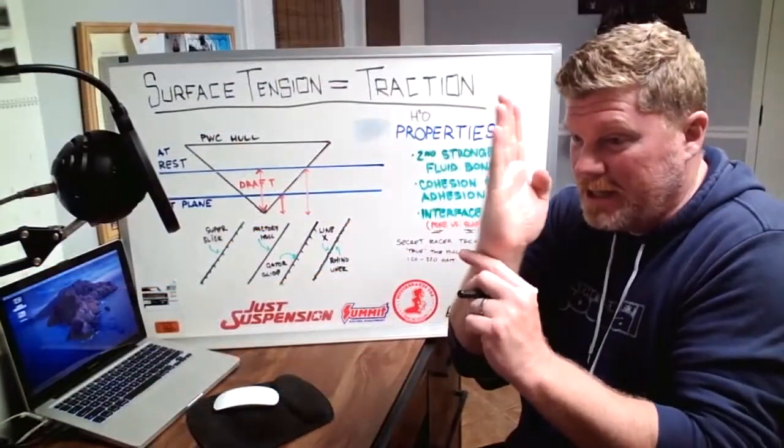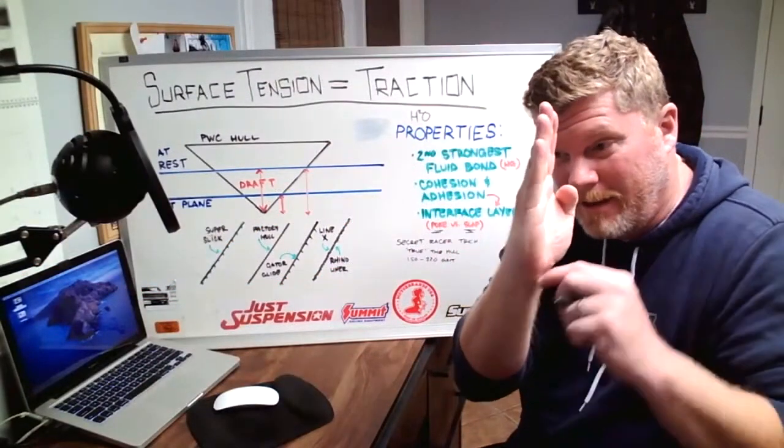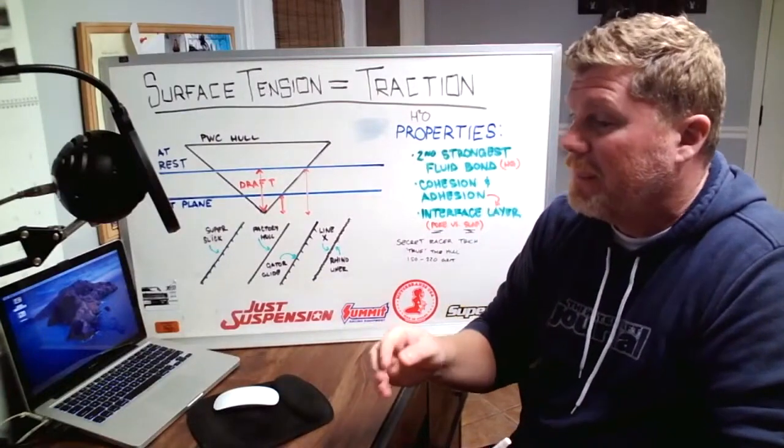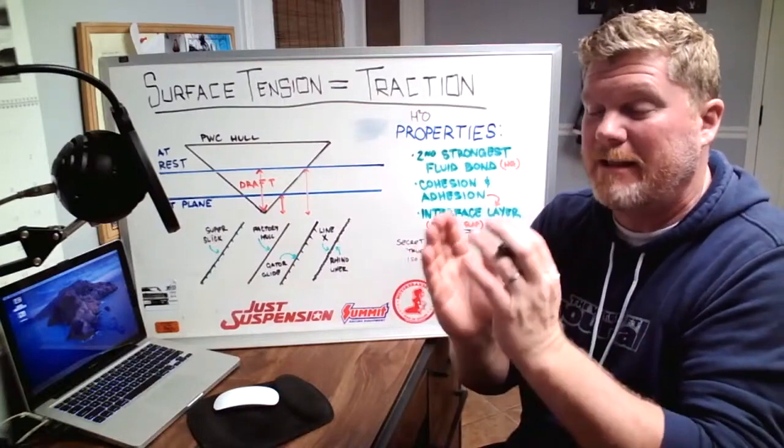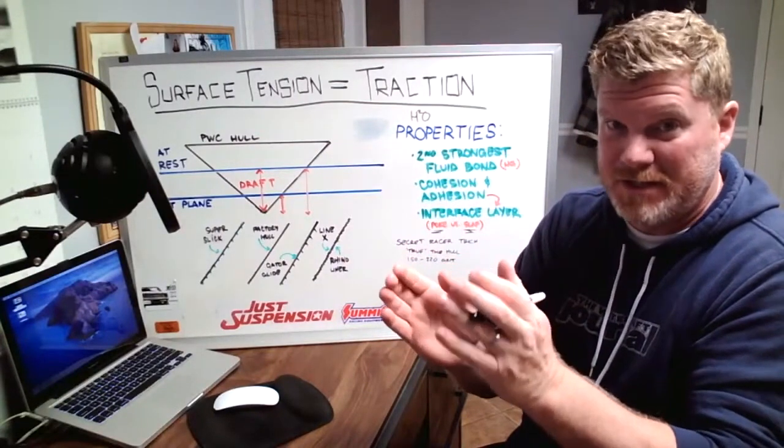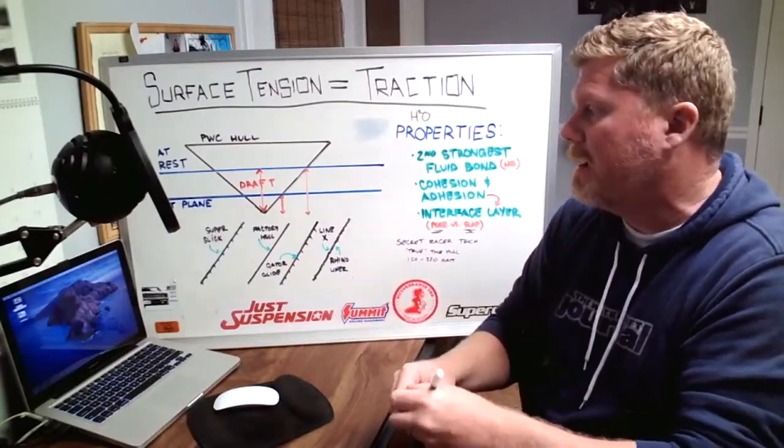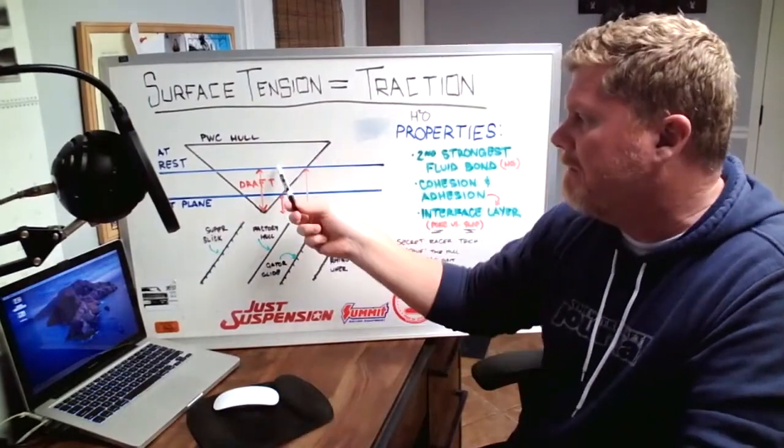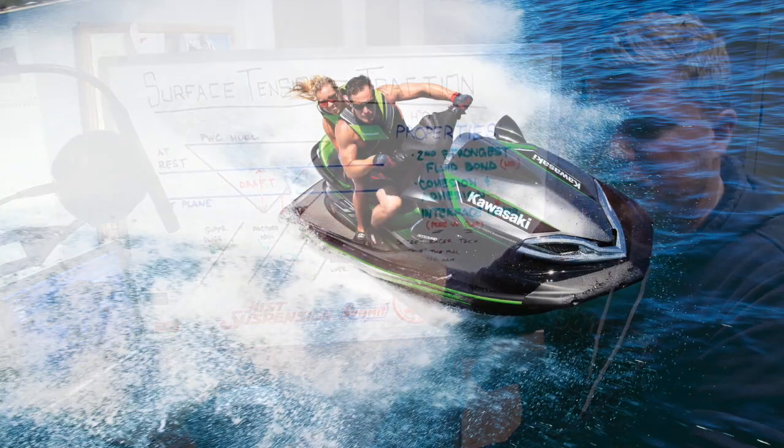You can see these boats going 130 miles an hour and it's just the outboard and the prop shooting a 30-foot roost out the back. They are running on very little surface tension. Kawis have the big draft, they have a lot of draft.